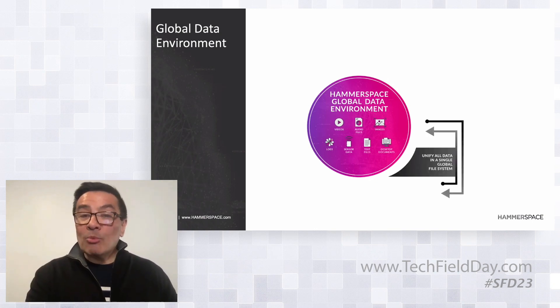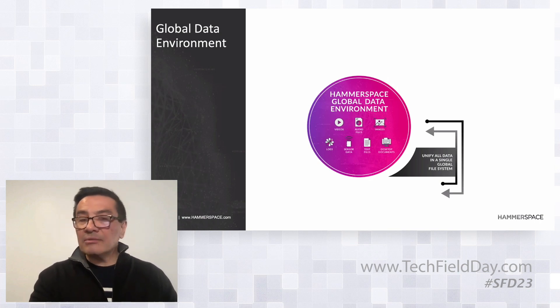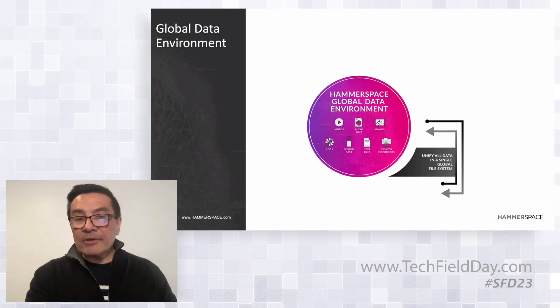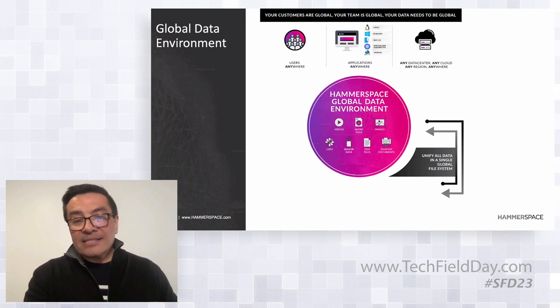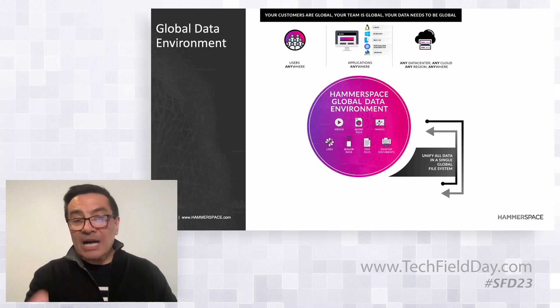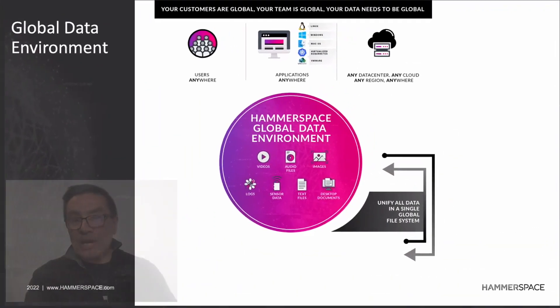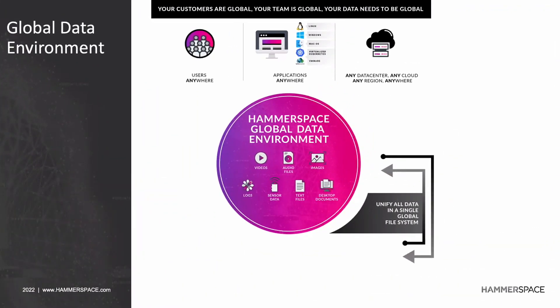The first element is our global file system. This creates a single logical system across multiple locations — data centers, the cloud, etc. — allowing access from your users and applications wherever they may be. In a global economy, they're scattered everywhere, and they need access to their network shares, which often consist of billions of files. We enable that, making it very efficient, cost-effective, and fast to get them the files they need when they need them, and in many cases even before they need them.